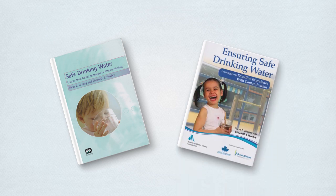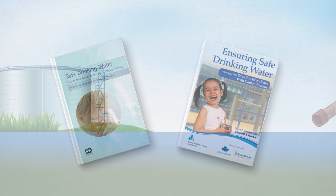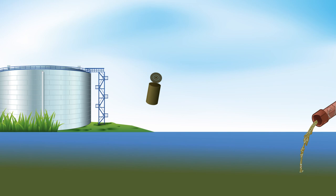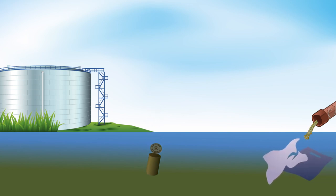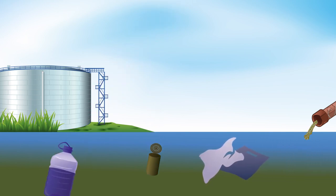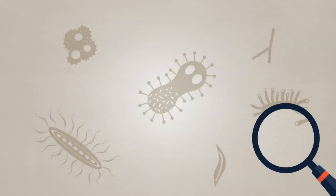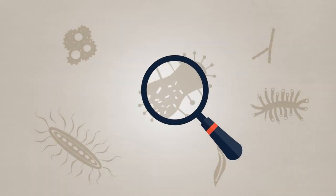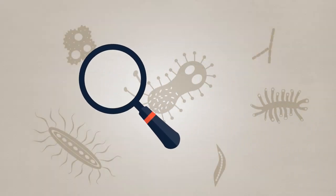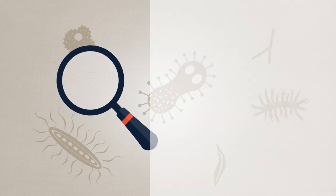Dr. Fruity and his wife Elizabeth have published two international books documenting case studies of drinking water contamination failures. More than 30 major drinking waterborne disease outbreaks in affluent countries have been reported in the scientific literature since Walkerton. In 2019, the Fruities examined reports of these outbreaks and described the major recurring themes that caused such failures.